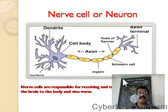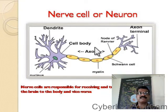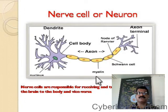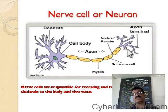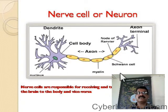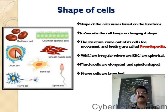Nerve cells, called neurons, are very important. Nerve cells join together to form your nervous system — which includes the brain, spinal cord, and lots of nerves. The nervous system is made up of the basic unit called the nerve cell or neuron. The structure of a nerve cell is very different from the blood cell, which is round or spherical in shape.